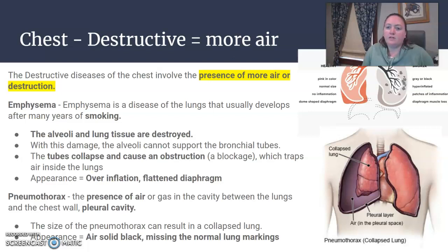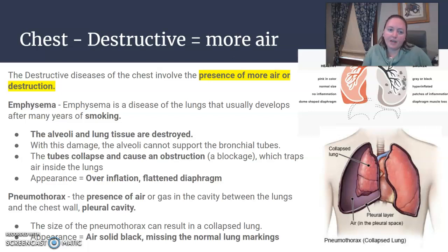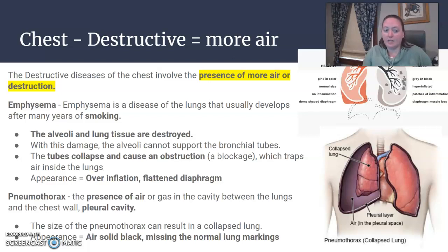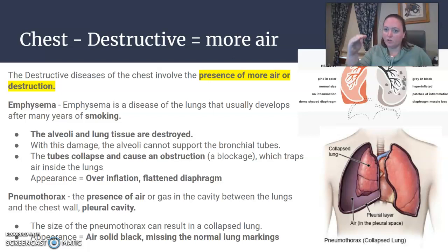Emphysema is a disease of the lungs that develops over many years, most often from smoking. The alveoli in the lung tissue are destroyed and this can't support the bronchial tubes. The tubes end up collapsing and cause an obstruction or blockage which traps air inside the lungs. The appearance will be an overinflation of the lungs, and often the diaphragms look almost flattened or pushed down versus the normal arc that we would see.